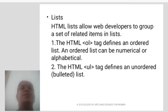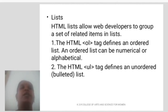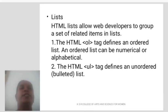HTML List: HTML lists allow web developers to group a set of related items in a list. The HTML OL tag defines an ordered list, which can be numerical or alphabetical. The HTML UL tag defines an unordered list, like bullets.